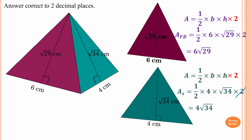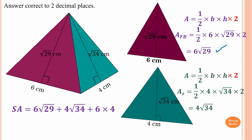Now what's left is the base, which is 6 × 4. So the surface area is: 6√29 (front and back) + 4√34 (left and right) + 6 × 4 (base). Putting that into the calculator gives 79.63 square centimeters — that is the surface area of this pyramid.